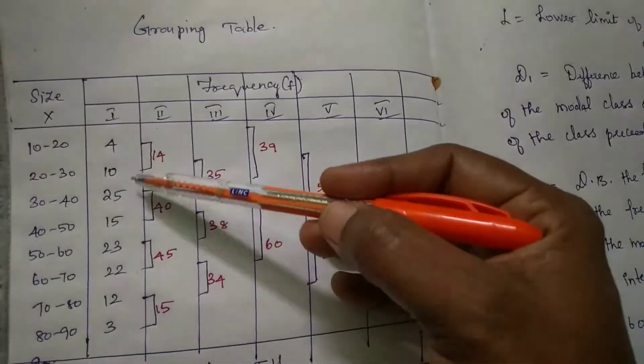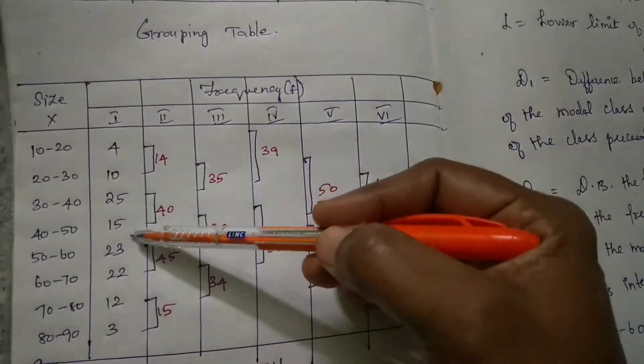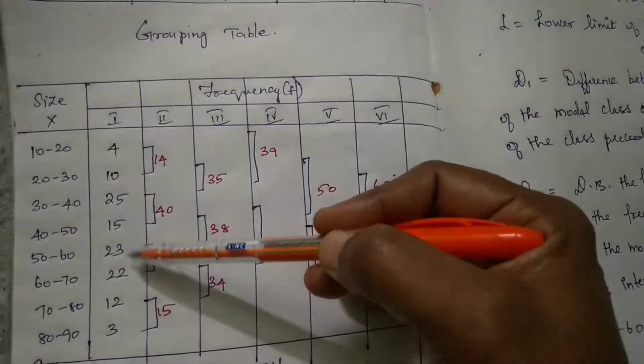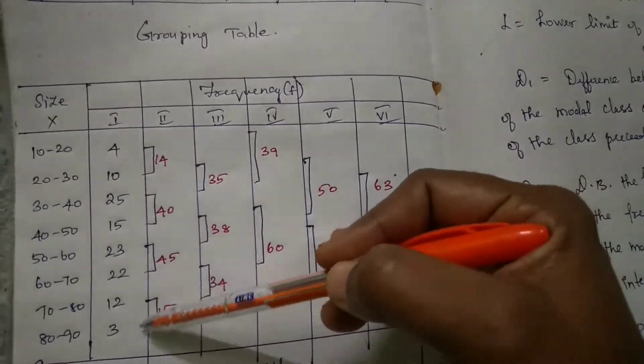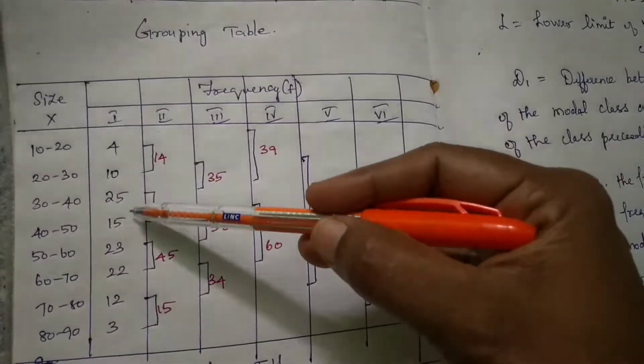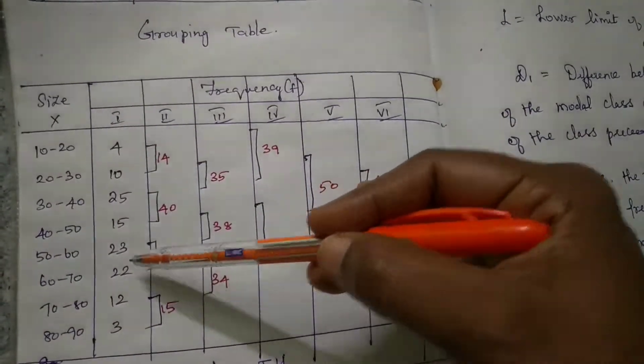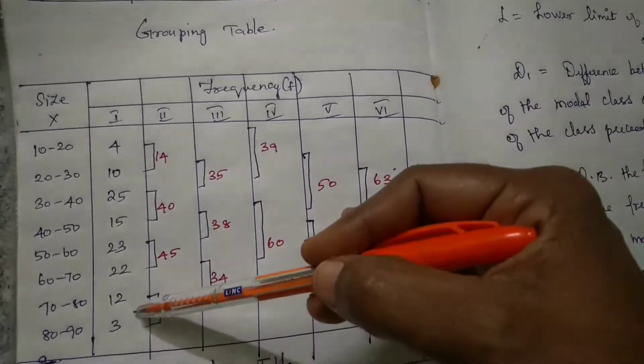In column 2, add the first two values: 4 plus 10 equals 14, 25 plus 50 equals... no, 10 plus 25 equals 35, 15 plus 23 equals 38, 23 plus 22 equals 45, 12 plus 3 equals 15. Third column, add the next two: 10, 25, 15 equals 40, 23, 38, 22 plus 12 equals 34. This is the third column.